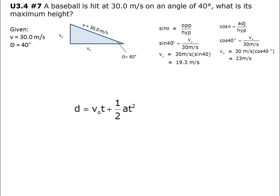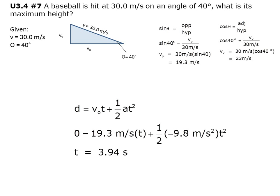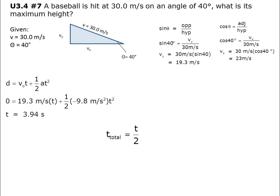Next, we're going to use the kinematic formula to figure out the time. D equals initial velocity multiplied by time plus half of acceleration multiplied by time squared. So 0 equals 19.3 meters per second multiplied by time plus half multiplied by negative 9.8 meters per second squared multiplied by t squared. That gives us t equal to 3.94 seconds. T total equals t over 2, so t total equals 3.94 seconds over 2, which equals 1.97 seconds.